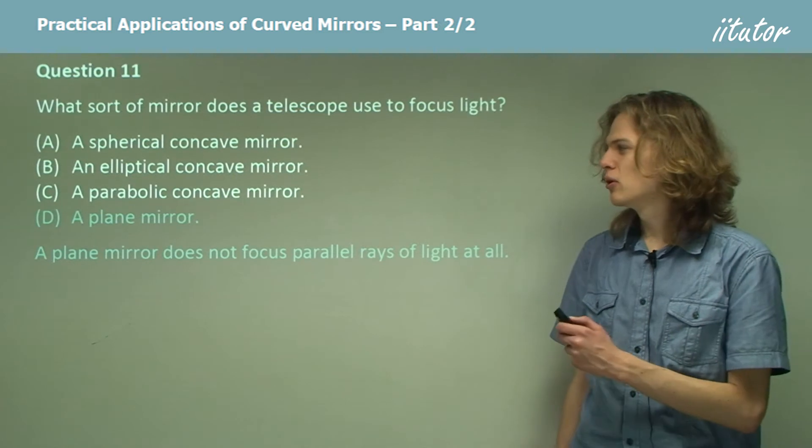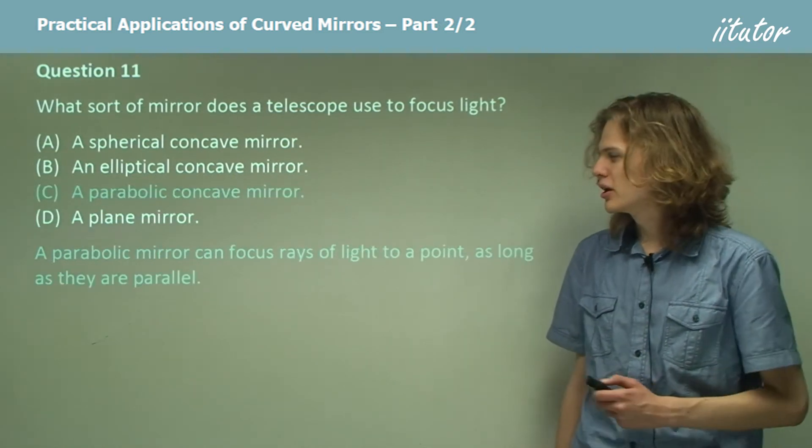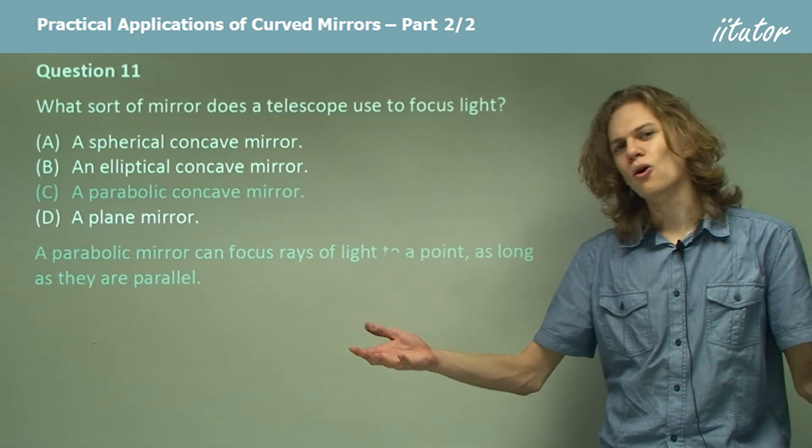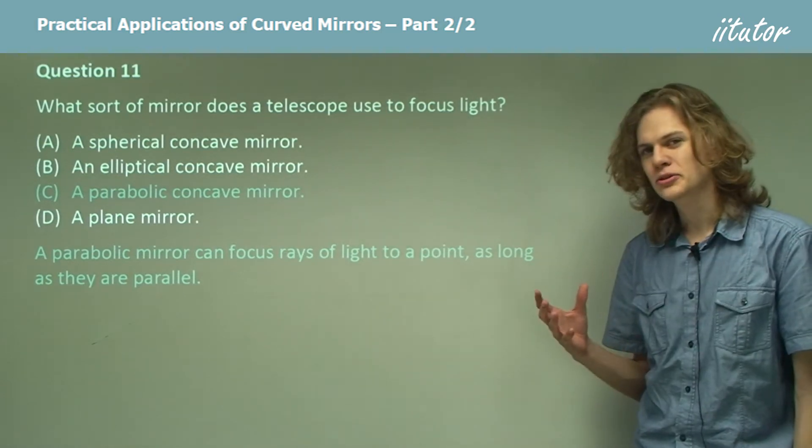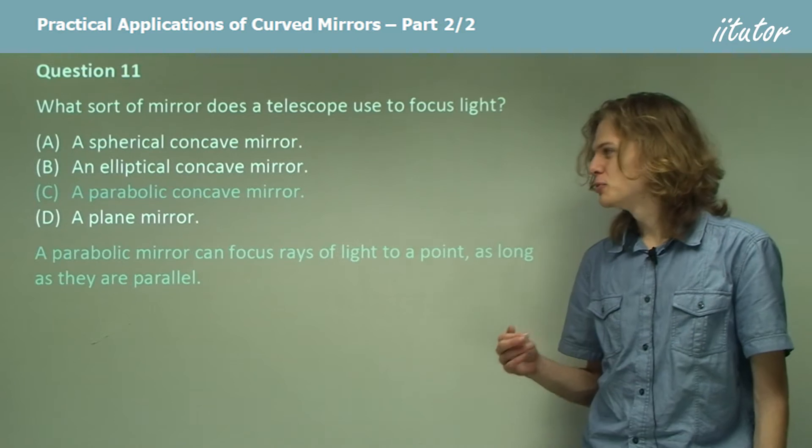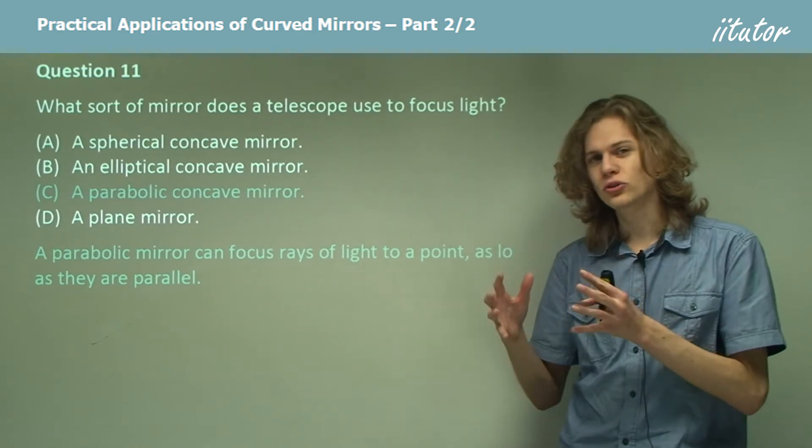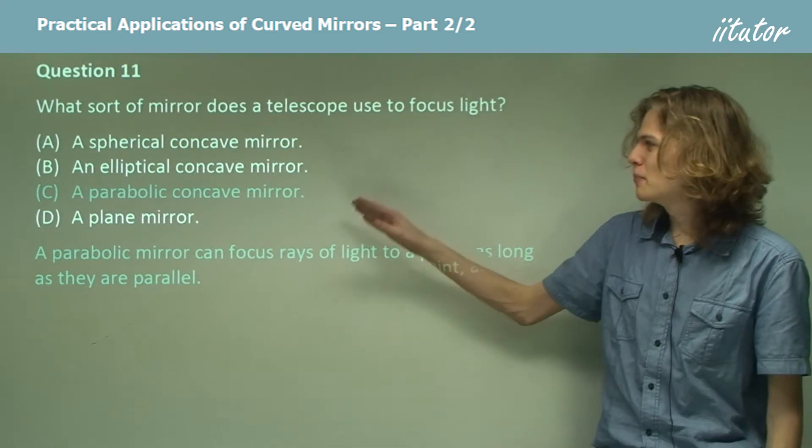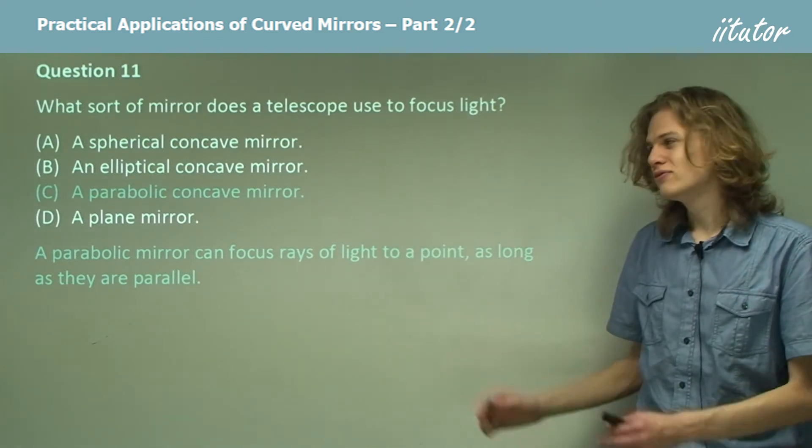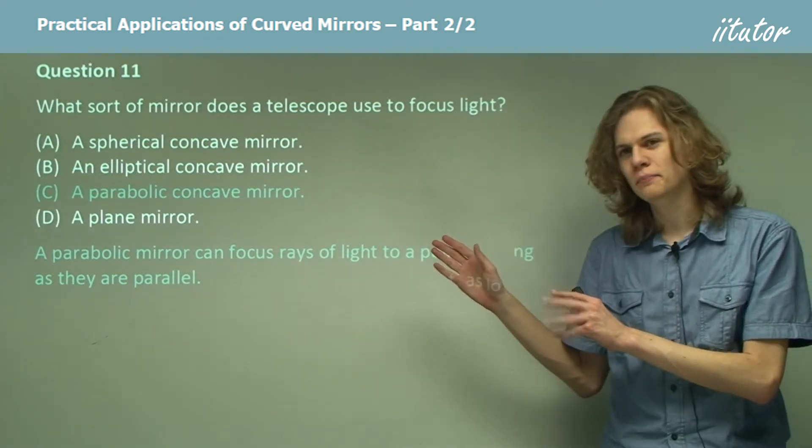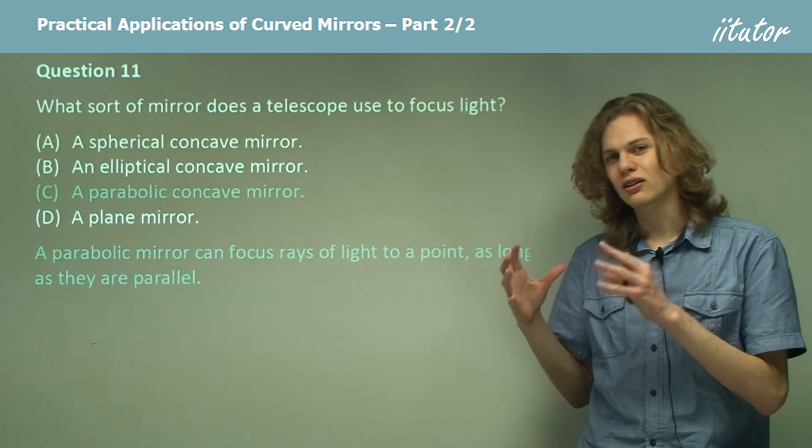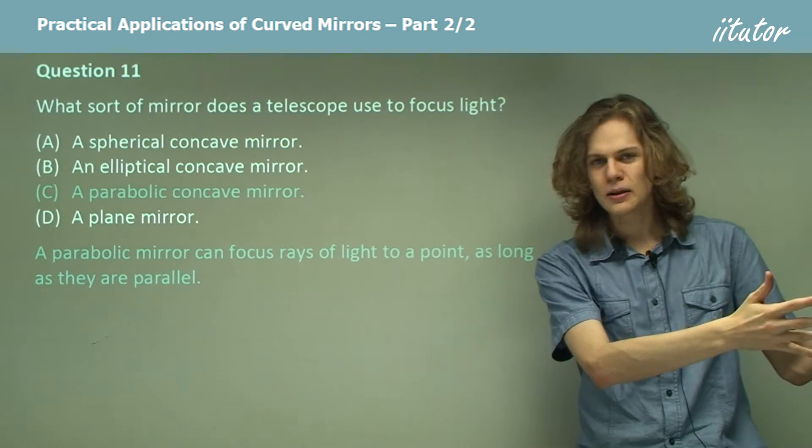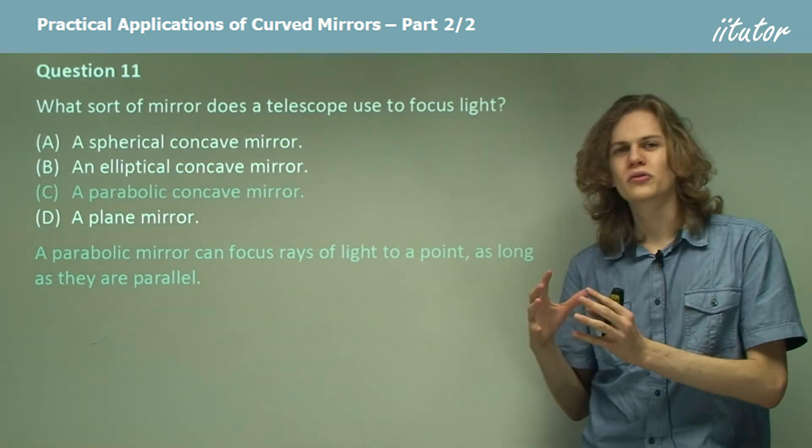Our last option, then, is a parabolic concave mirror. Now, I mentioned before that an ellipse that is an infinite length long is a special case of an ellipse. That's because if we look at the region near one focus of the ellipse, we can see that it is, in fact, identical to a parabola. So if we have a parabolic concave mirror, that's the same as having an ellipse that will focus light coming from infinity to the other focus of the ellipse.